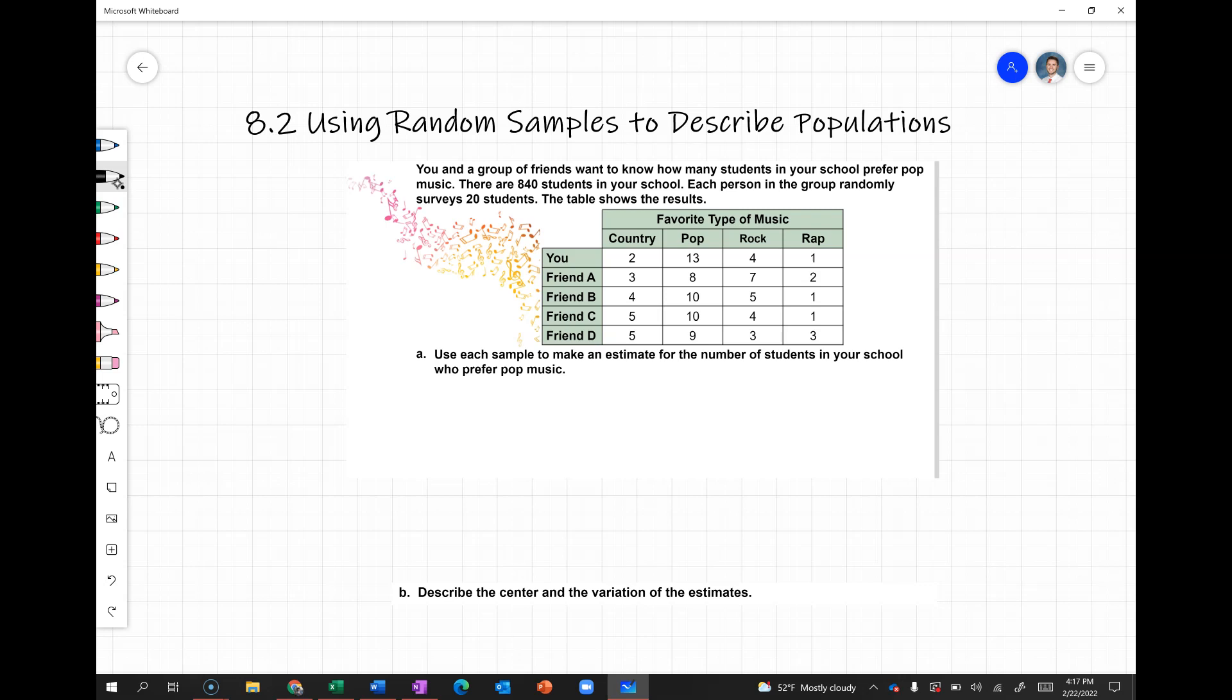Looking here at this first example, it says you and a group of friends want to know how many students in your school prefer pop music. There are 840 students in your school. Each person in the group randomly surveys 20 students and the table below shows the results. We can see you and then four friends each surveyed 20 different people.